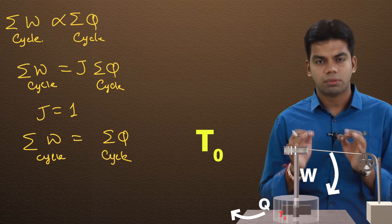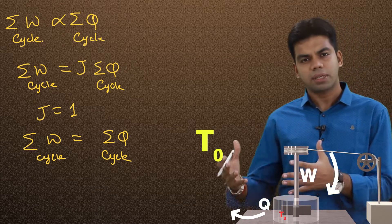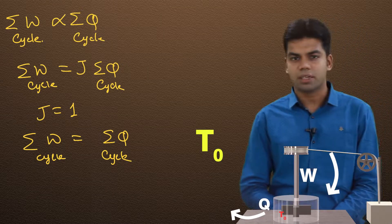And this actually became the official statement of first law of thermodynamics. First law of thermodynamics says that in a complete cycle, total algebraic sum of work transfer is equal to algebraic sum of heat transfer.